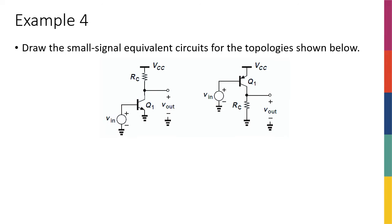Let's actually draw the small signal model for these two circuits. For one of them, RC is connected between the collector and VCC for the NPN transistor. For the PNP transistor, RC is actually between the collector and ground. But Vout is always defined as the voltage at the collector with respect to ground for both cases.